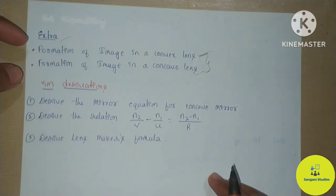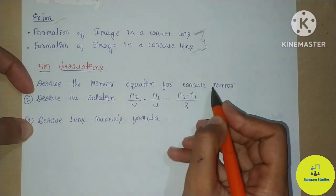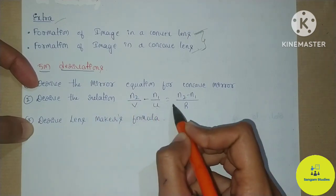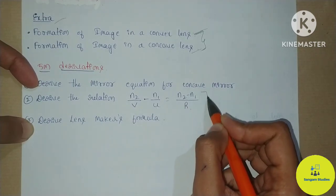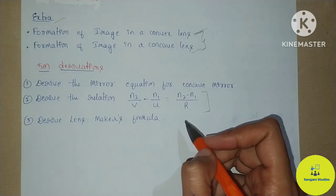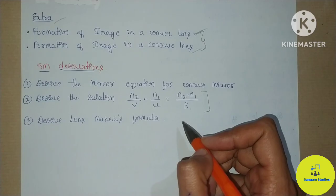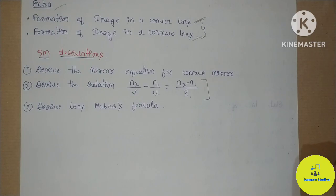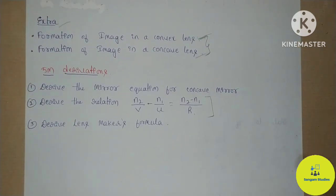Here we have five-mark derivations — three derivations: mirror equation of a concave mirror, and derive the relation n2/v minus n1/u equals (n2 minus n1)/r. Next, the lens maker's formula. According to your new blueprint, these derivations are not in this chapter because five marks have numerical problems. But in previous question papers, you can see these derivations every time — learn these derivations because they are important. Your blueprint is not important in this case, but anyhow, we have to clear these points in the next exam.